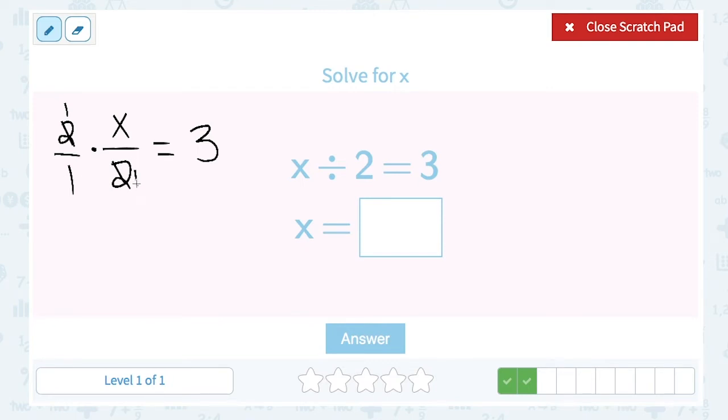If I multiply these, they cancel out and become 1 and 1. This becomes 1 times x is x, 1 times 1 is 1, x over 1 is x. Now we go over here and multiply by 2, and that is 6.